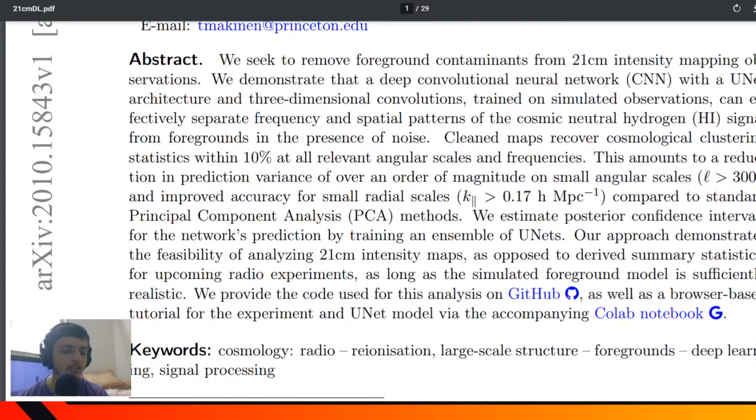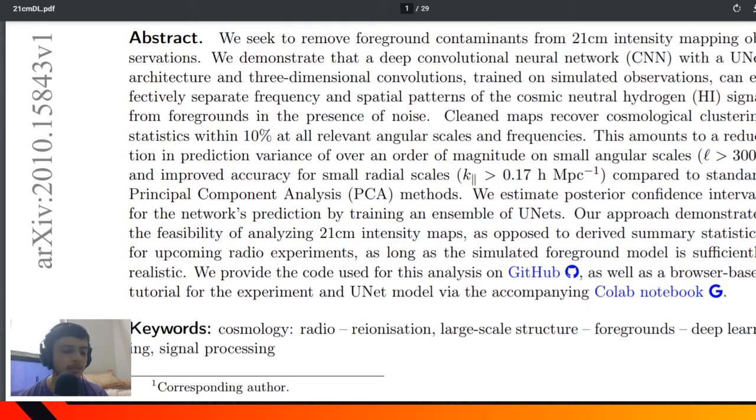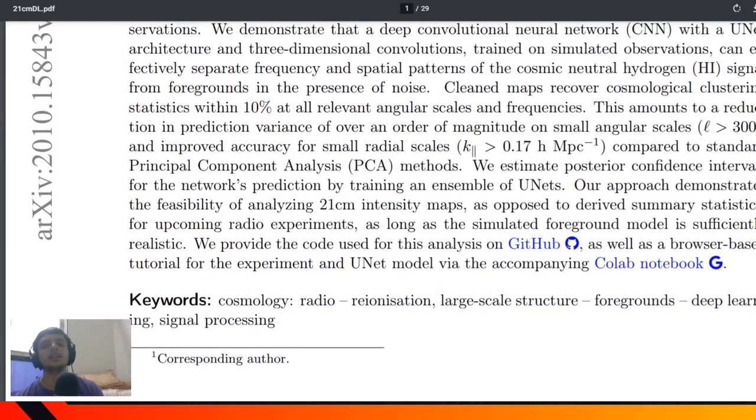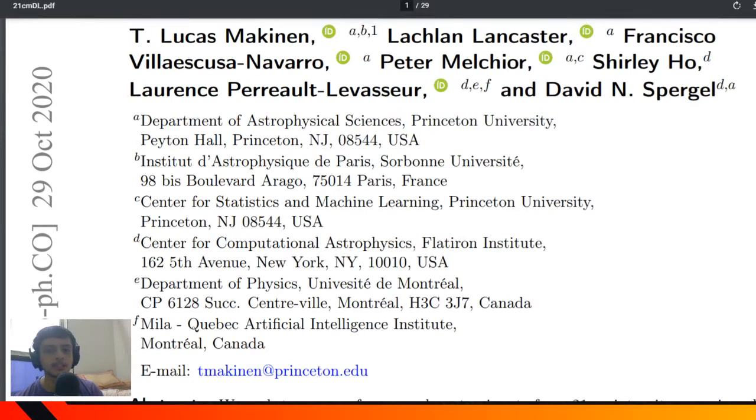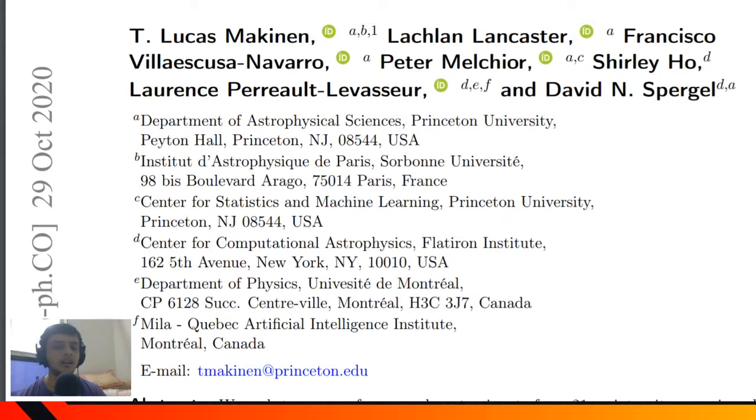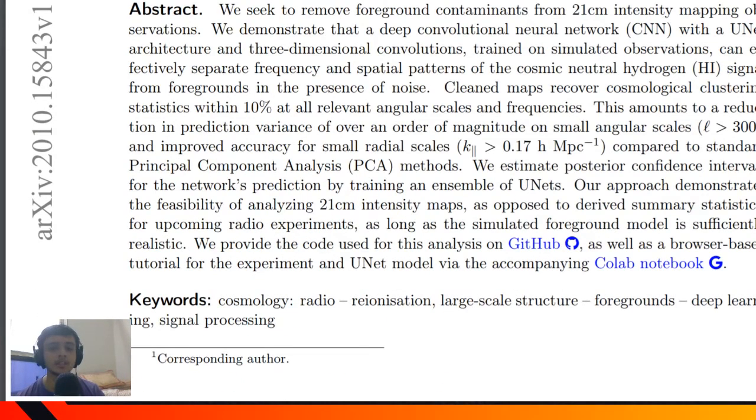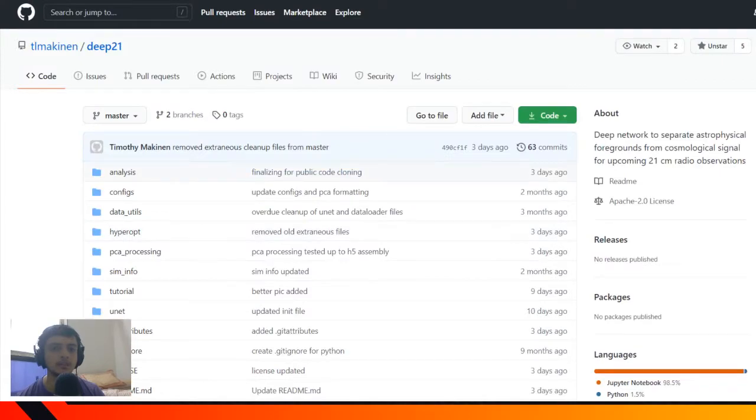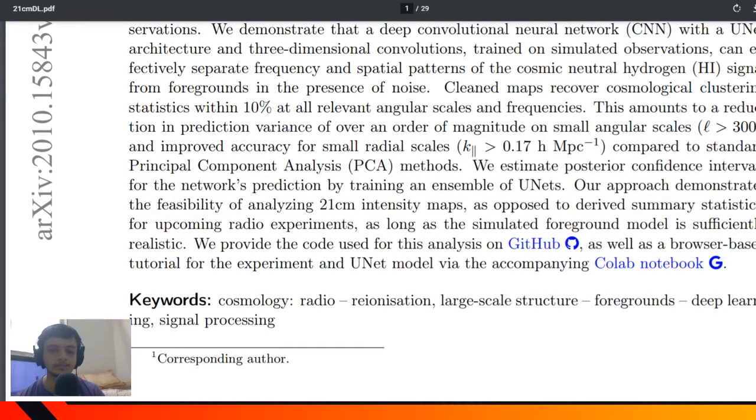These hydrogen measurements help us gain information about our universe's evolution and provide observations to trace both the growth of massive structures and early cosmology. The data is collected by intensity mapping. The authors from Princeton University and Montreal University have also published their code on GitHub and Colab.